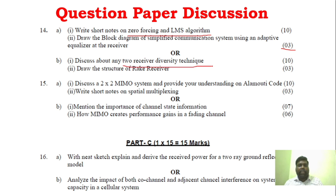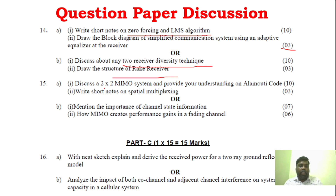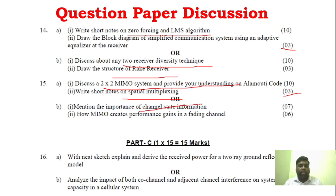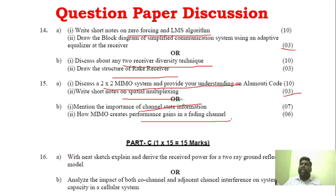You can see two receiver diversity techniques, or rake receiver — the structure of rake receiver is just a diagram. For the last question, MIMO system is very important. Spatial multiplexing is 3 marks. Channel state information — what are the conditions and importance — and performance gain in fading channel versus non-fading channel capacity are very very important topics.